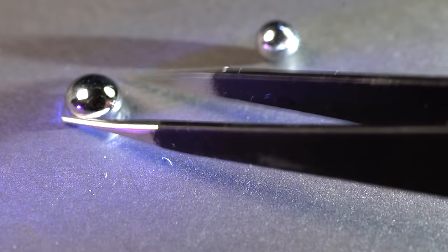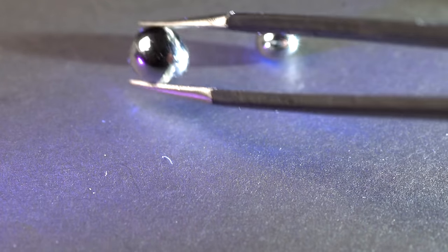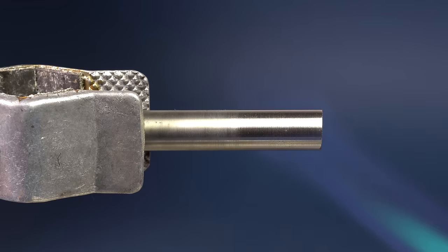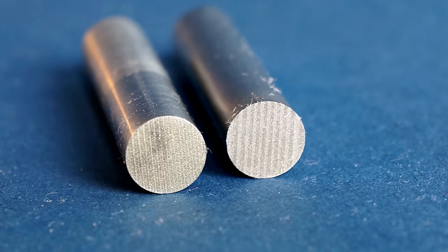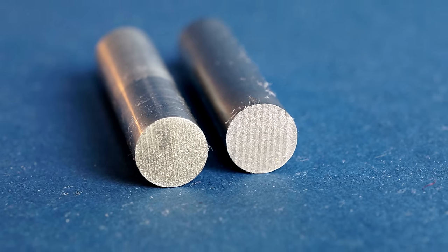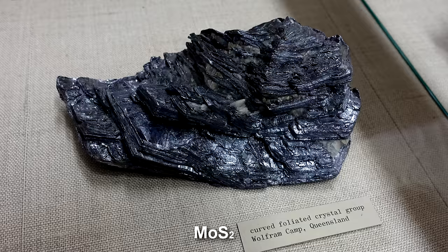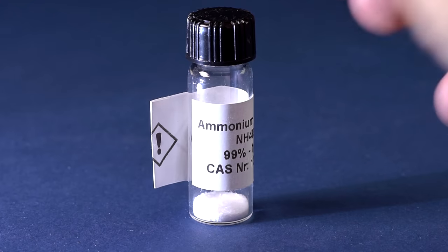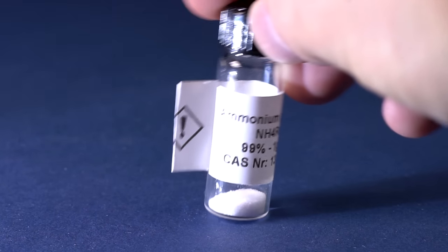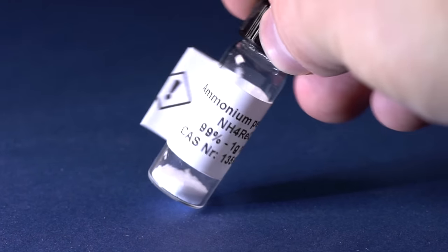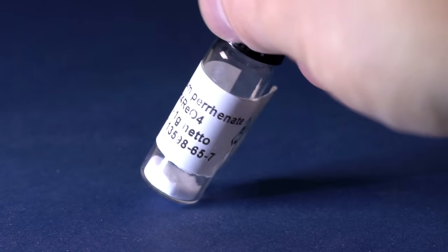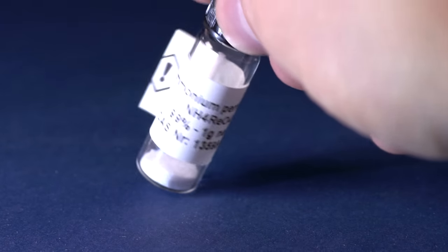Because it's being so rare, rhenium was discovered only in 1925 by three German scientists. Today this metal is extracted as a by-product in molybdenum mining from such a mineral as molybdenite. Pure ammonium perrhenate that metallic rhenium is extracted from is obtained as a result of refining and concentration of the ore.